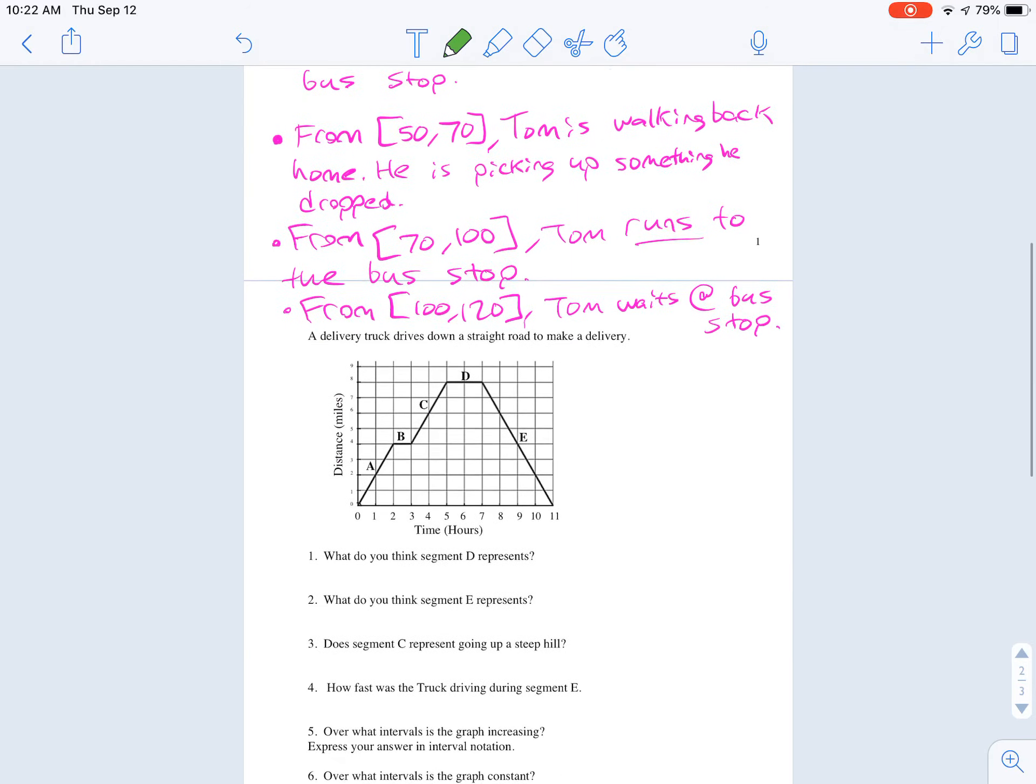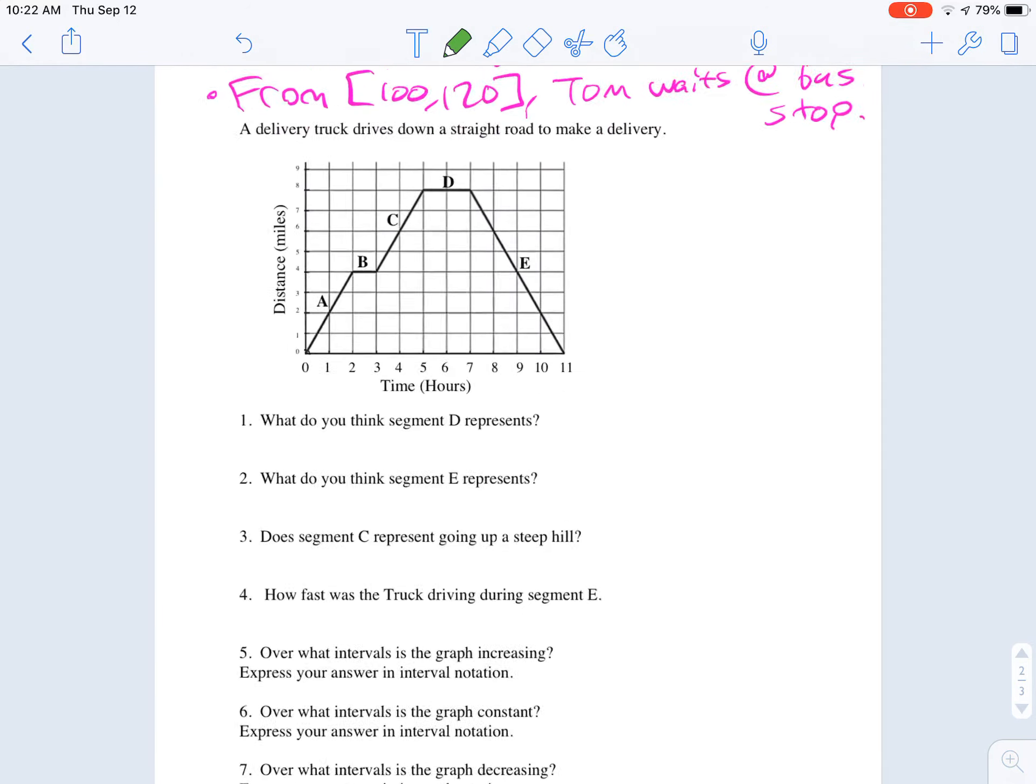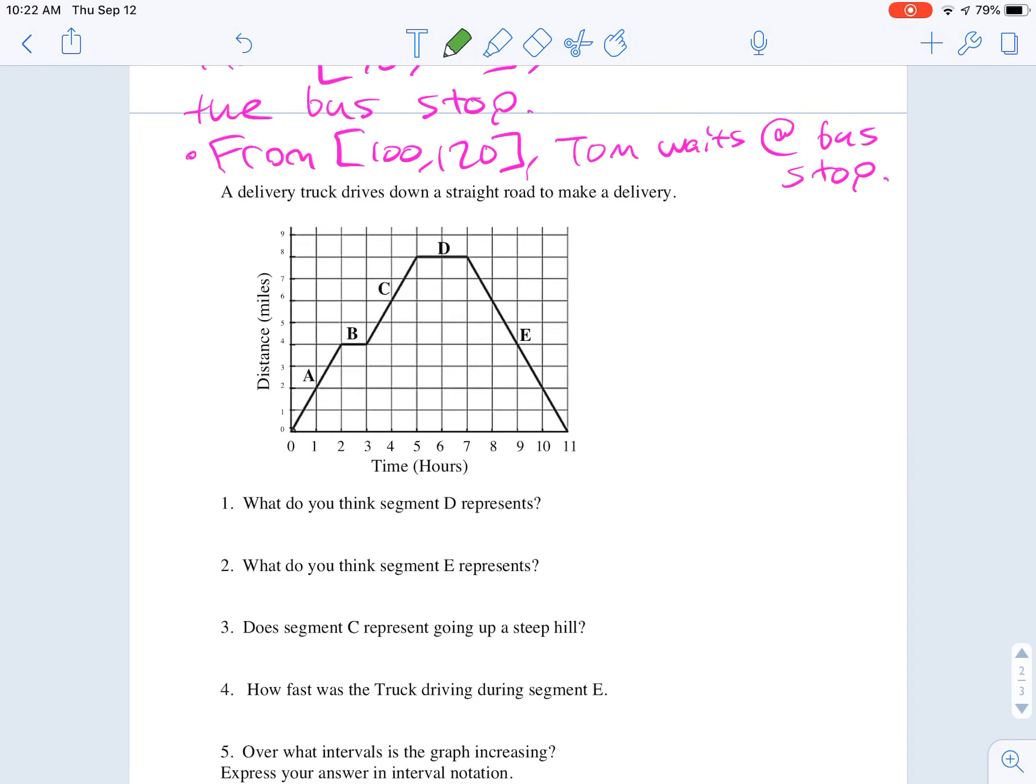So now we move on to a second example. We've got these different segments for this delivery truck driving down a straight road to make a delivery. So we see that its distance, this is like distance from its starting point. His distance is increasing here in section A. Then it looks like it's constant in section B. Looks like it's increasing again in section C. Looks like it's staying constant in section D. And it looks like it is decreasing in section E.